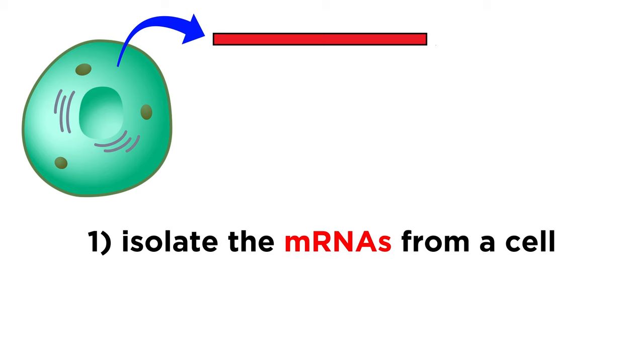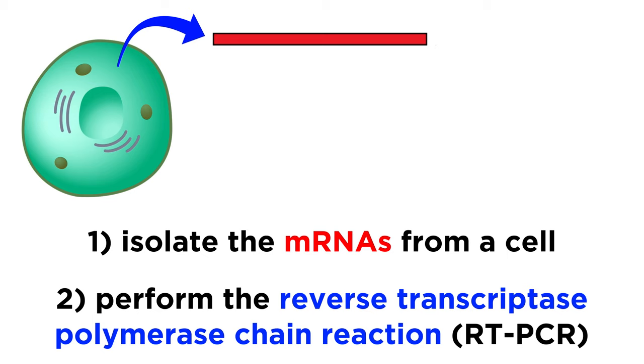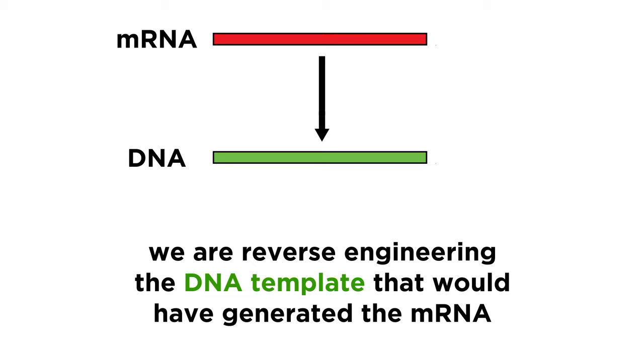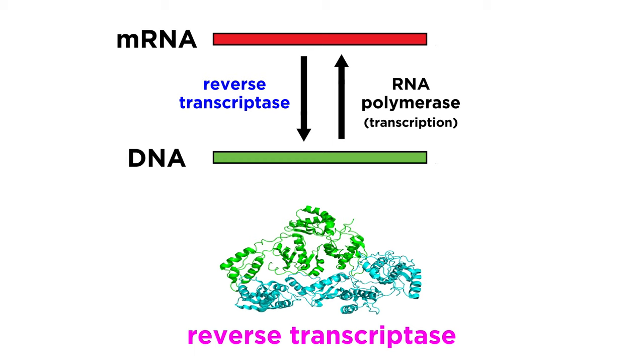As we said, analyzing gene expression will typically involve isolating mRNAs from a cell, because from these we can perform the reverse transcriptase polymerase chain reaction, or RT-PCR. This is where we take an mRNA and create a complementary DNA strand, in essence reverse engineering the DNA template that would have generated the mRNA during transcription. That is why the enzyme that performs this function is called reverse transcriptase, as the process is essentially the reverse of transcription.